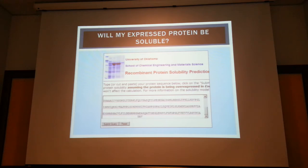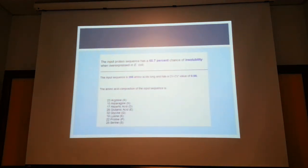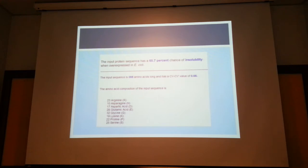Regarding recombinant protein solubility — in a majority of cases in E. coli the protein will be in insoluble form, though in some cases it will be soluble. To predict this, we use a recombinant protein solubility prediction calculator from the University of Oklahoma. You feed in your amino acid sequence and it predicts your percentage insolubility — for example, 65.7% chance of insolubility means it should be in the pellet. This calculation is based on the hydrophobicity and hydrophilicity of each amino acid.